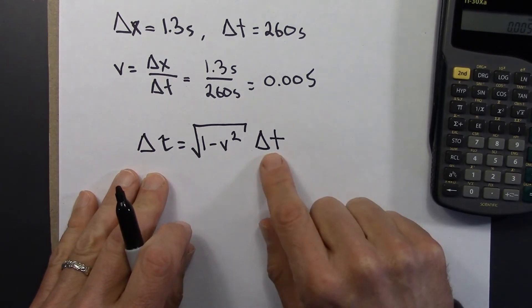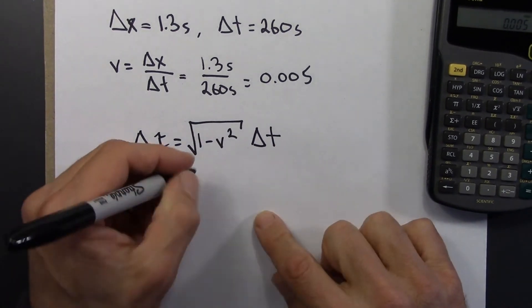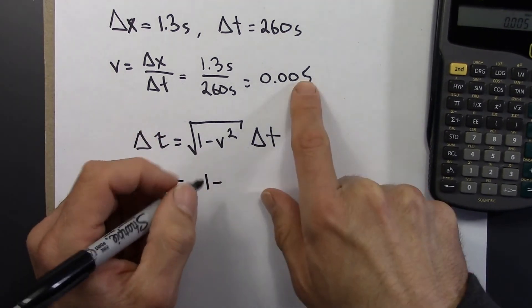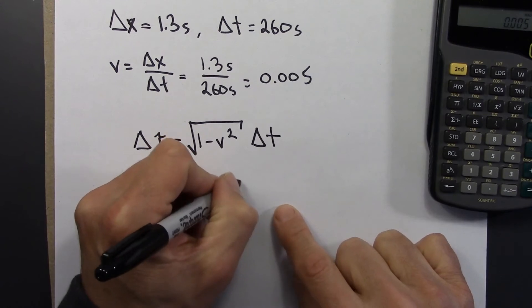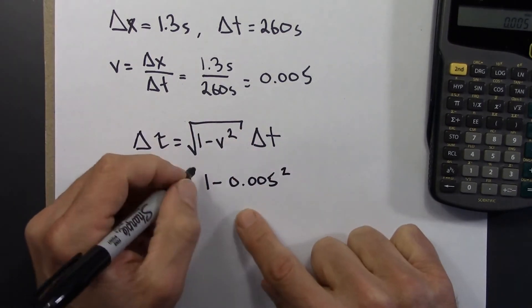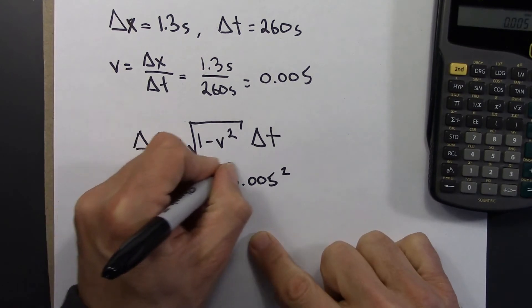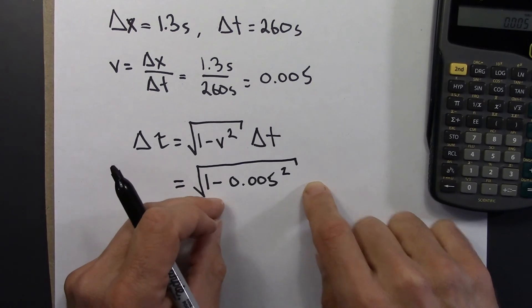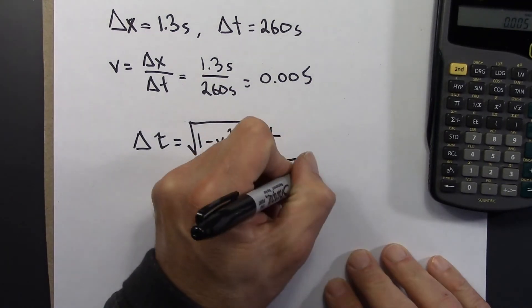Alright, so we know everything on the right hand side. So we can plug in, 1 minus v squared, that's 0.005 squared. This whole thing is square rooted. And then I need to multiply by the time interval, which was this 260 seconds.